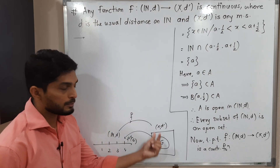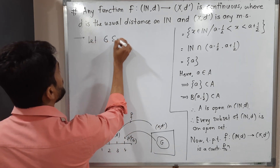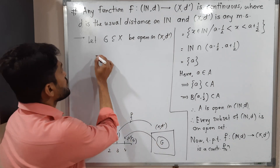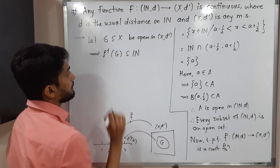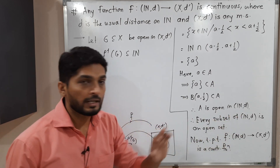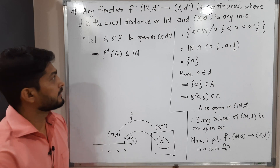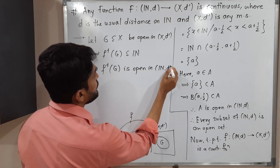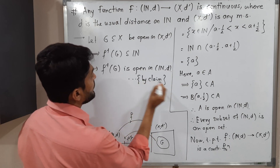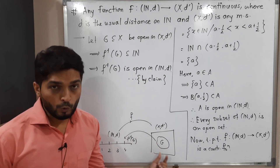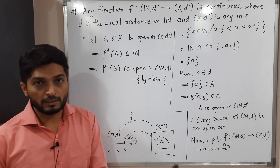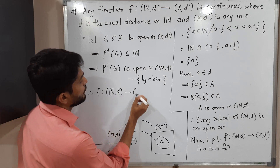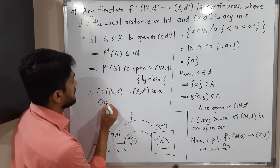Let G ⊆ X be open in (X, d'). If we take its inverse image, it is obviously a subset of N. But we just proved every subset of (N, d) is open, and f⁻¹(G) is also a subset of N. Therefore, by our claim, f⁻¹(G) is open in (N, d). We had taken any arbitrary open subset of the co-domain and proved its inverse image is also open in the domain. Therefore by the definition of a continuous function, f from (N, d) to (X, d') is a continuous function.